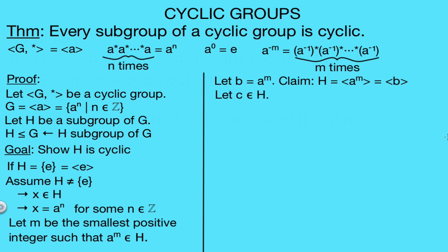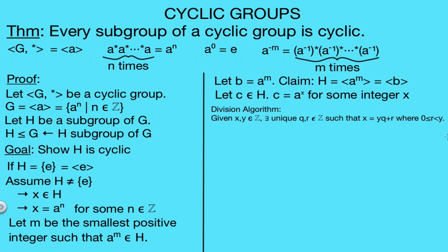Let's say that C is any element in our subgroup H. For the same reasons as before, we can write C as A to the X for some integer X. For the next part, you're going to need to remember the division algorithm. It states that given any integers X and Y, there exist unique integers Q and R such that X can be written as Y times Q plus R, where R is greater than or equal to zero and less than Y.